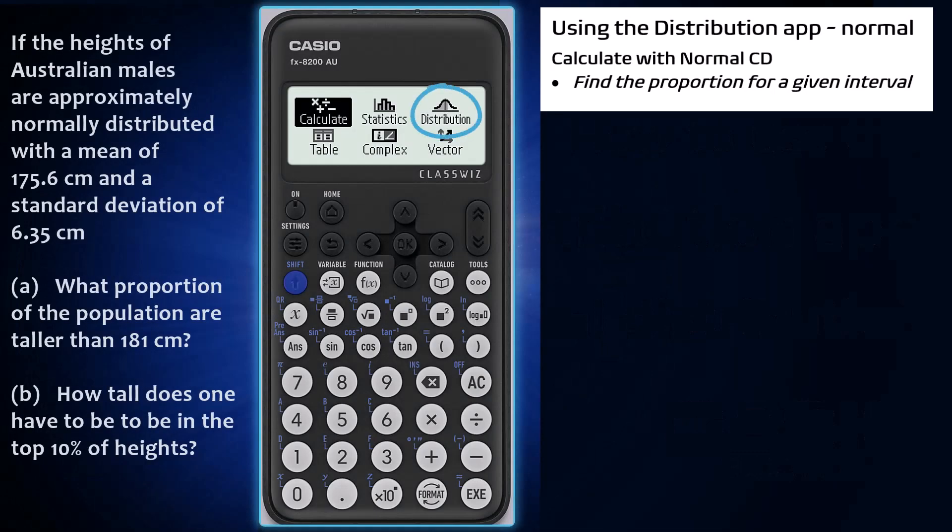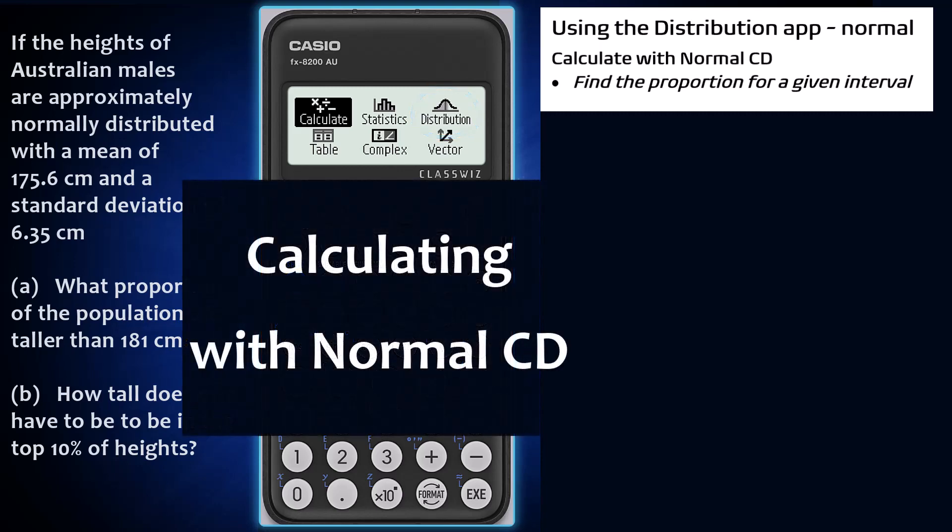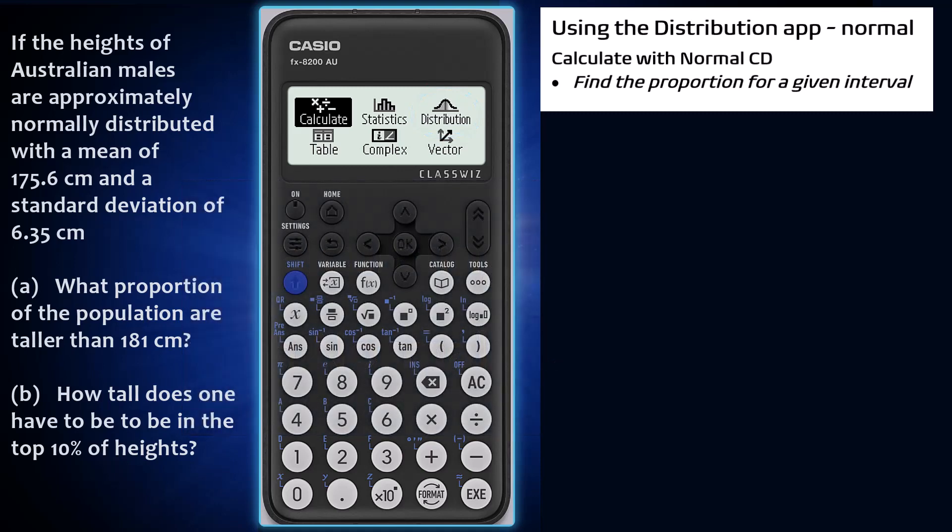The distribution app of a Casio FX-8200 AU can be used to perform a range of calculations involving normal distributions. One such calculation is the question posed here: what is the proportion of heights that are greater than or equal to 181 centimeters if heights are distributed normally with a mean of 175.6 centimeters and a standard deviation of 6.35 centimeters, as they are for Australian males.